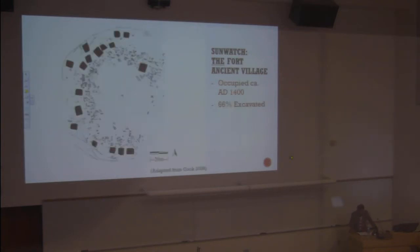66% of the site has been excavated, most of it professionally. Sunwatch is a circular village arranged in concentric zones, and its population would have been between 250 to 400 people. 400 is probably very high. Probably 250 to 300 is more likely. It's arranged in concentric zones.